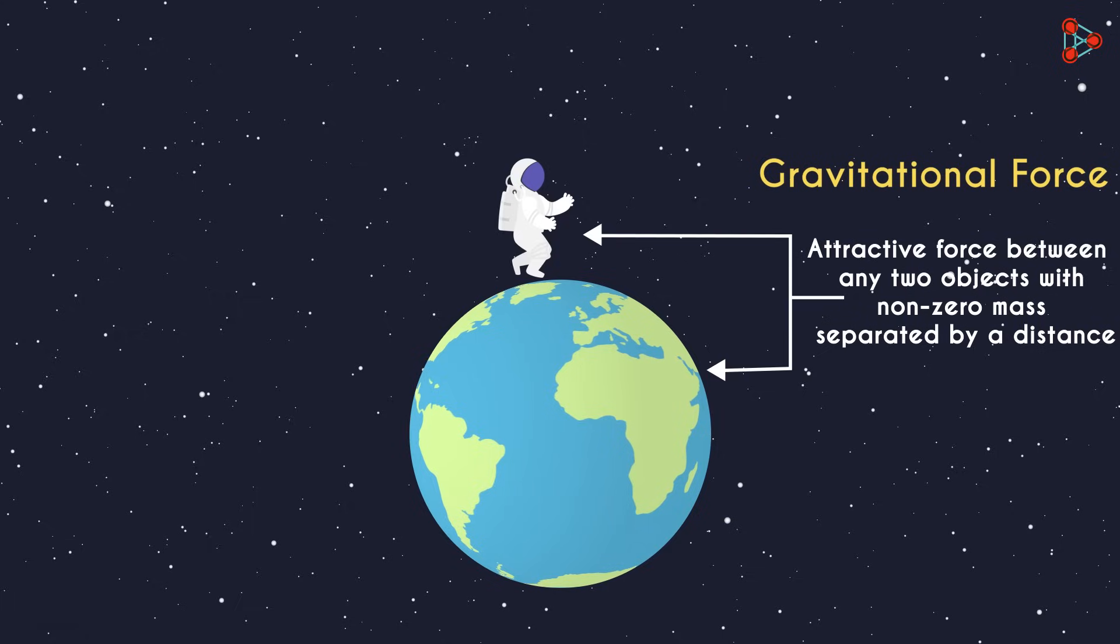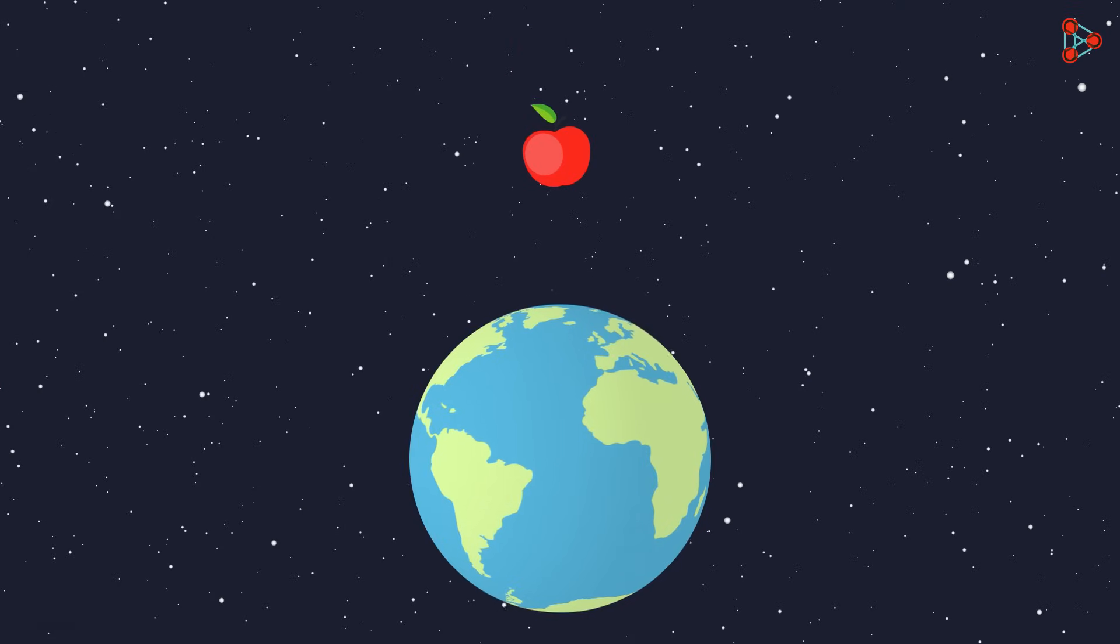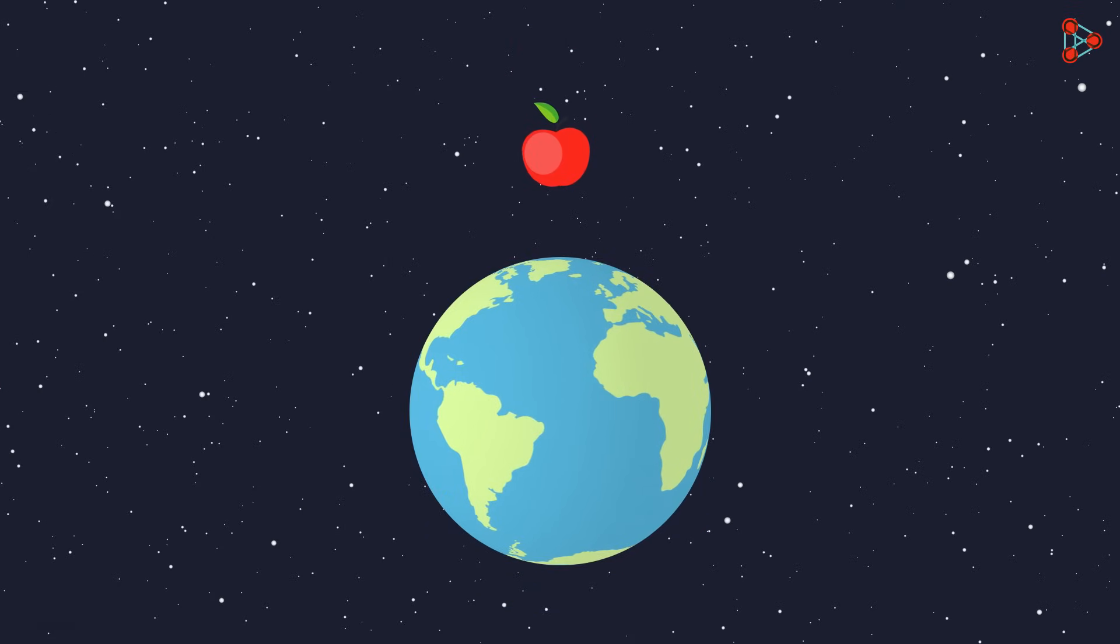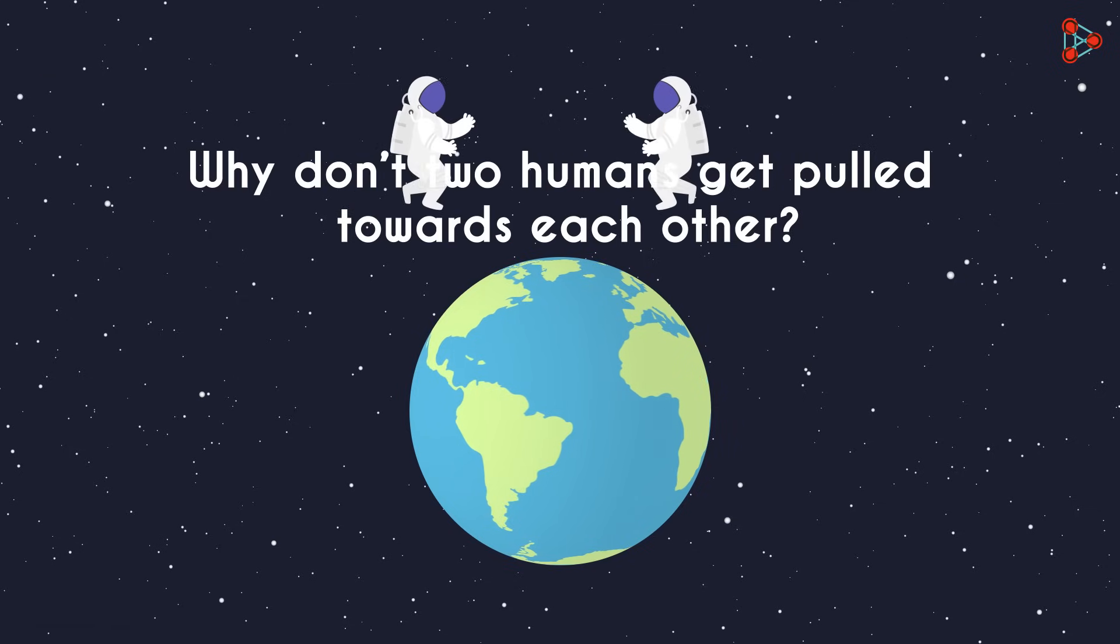After knowing the basics, you'd probably have many questions in mind. Does the apple fall towards the earth or does the earth move towards the apple? If two objects always attract each other, why don't two humans get pulled towards each other?